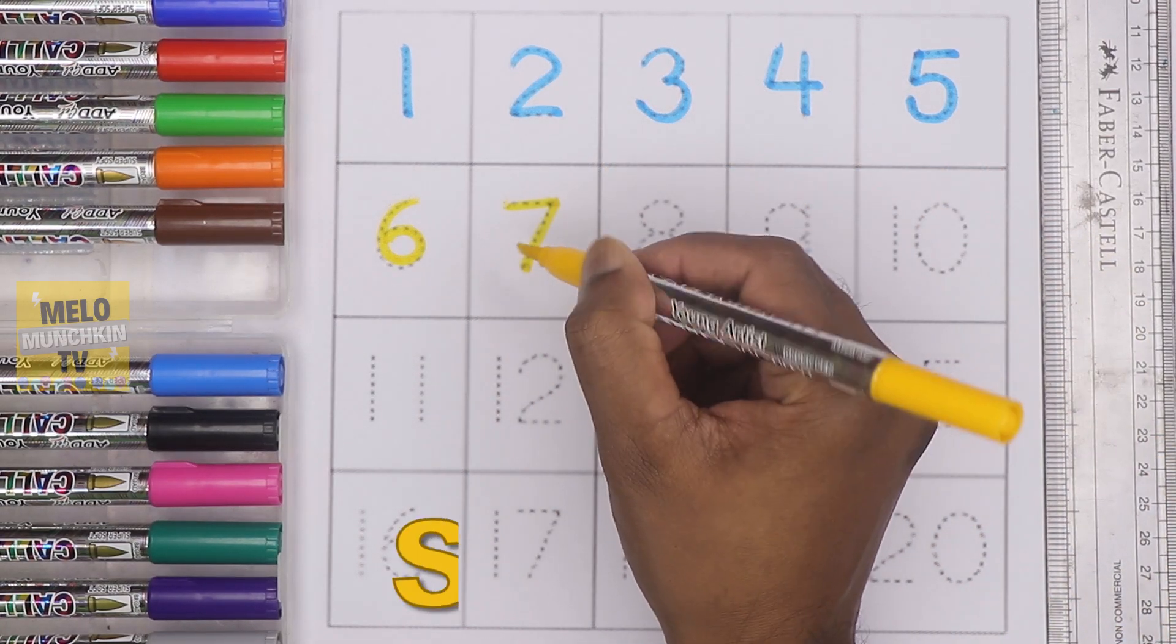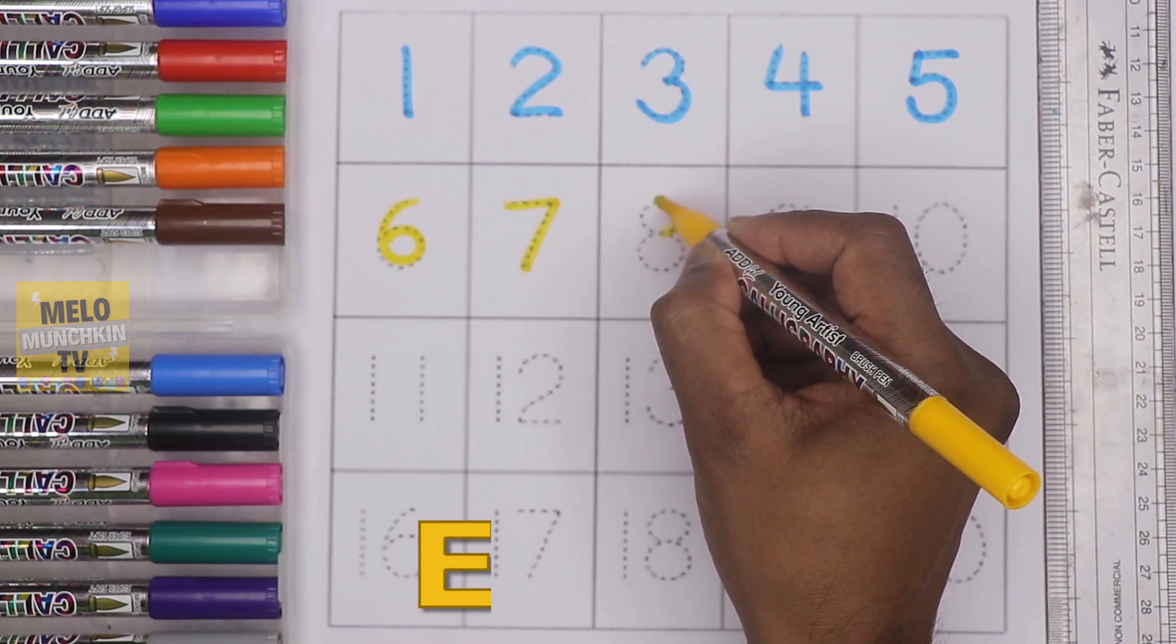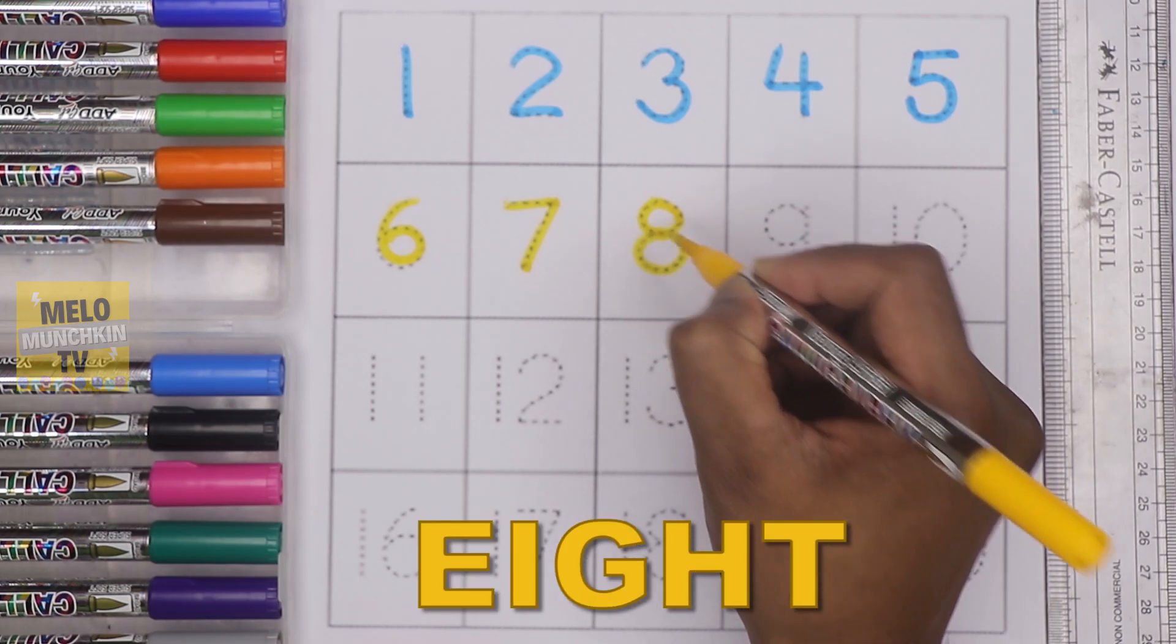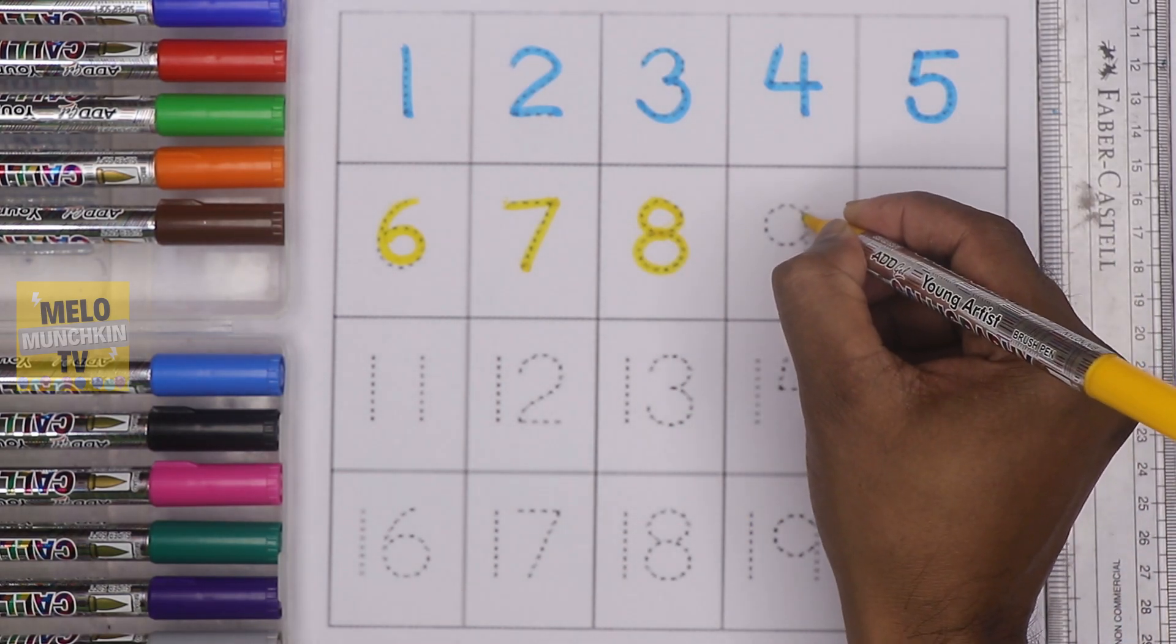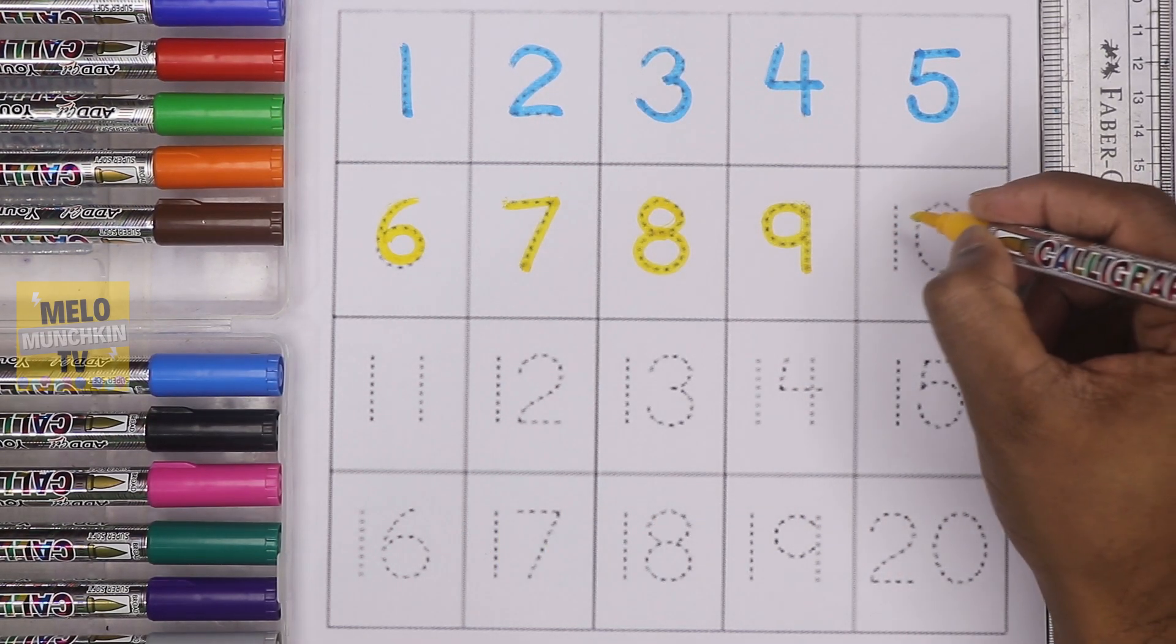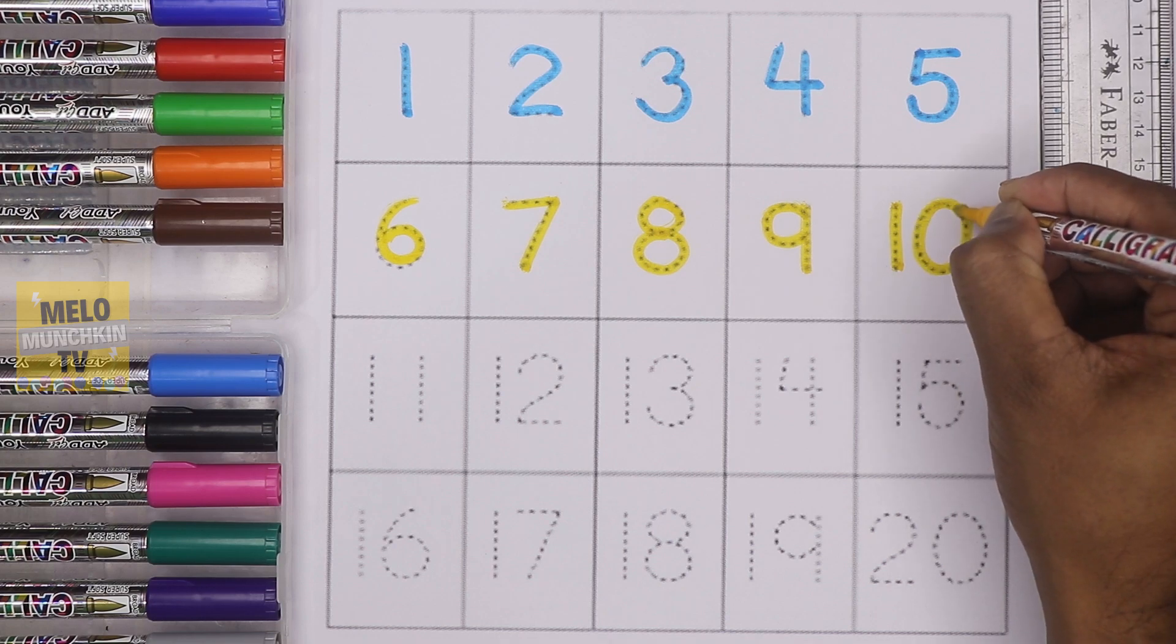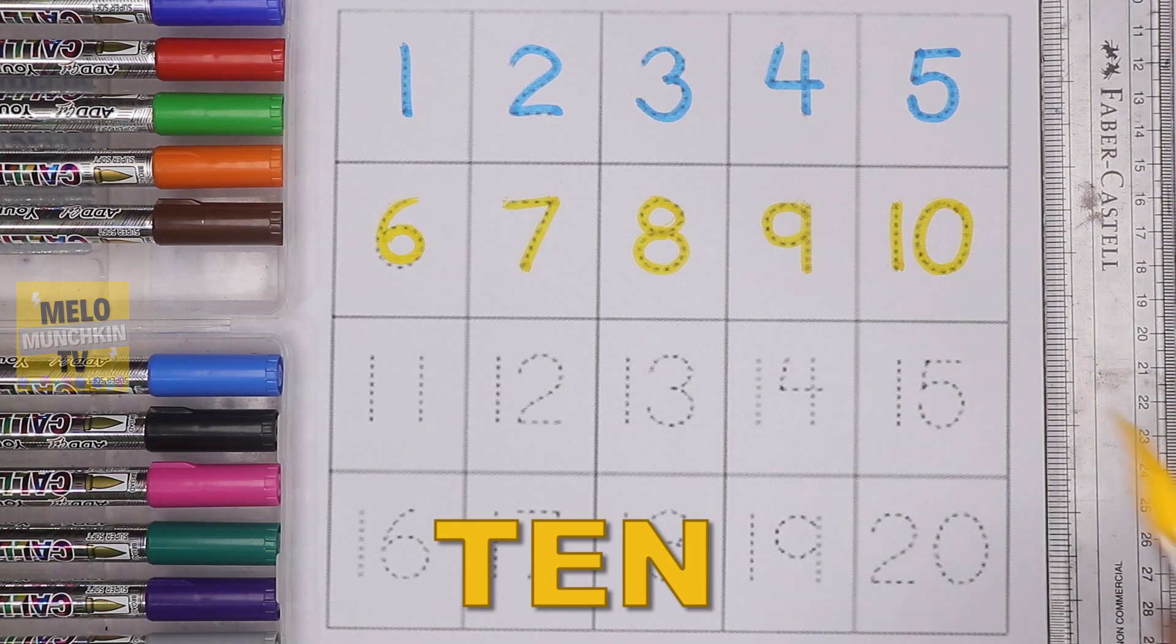Then seven, S-E-V-E-N, seven. This is eight, E-I-G-H-T, eight. Next it is nine, N-I-N-E, nine. Next it is ten, one-zero, ten. The spelling is T-E-N, ten.